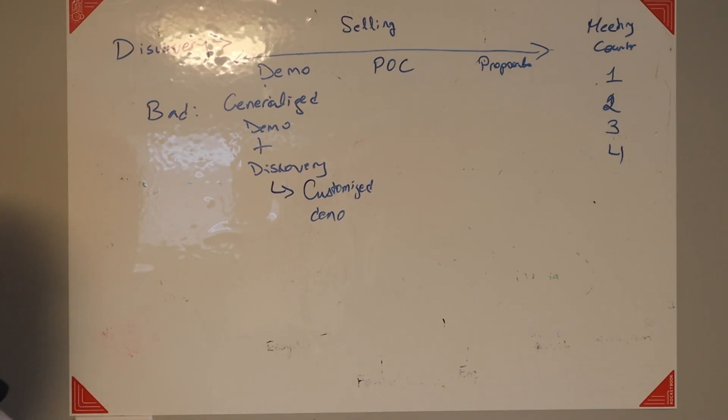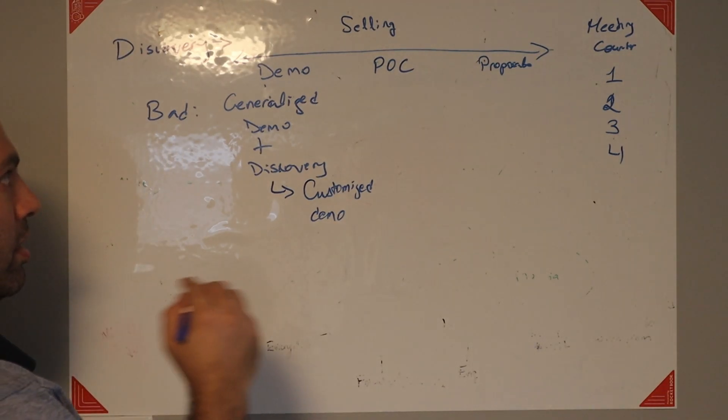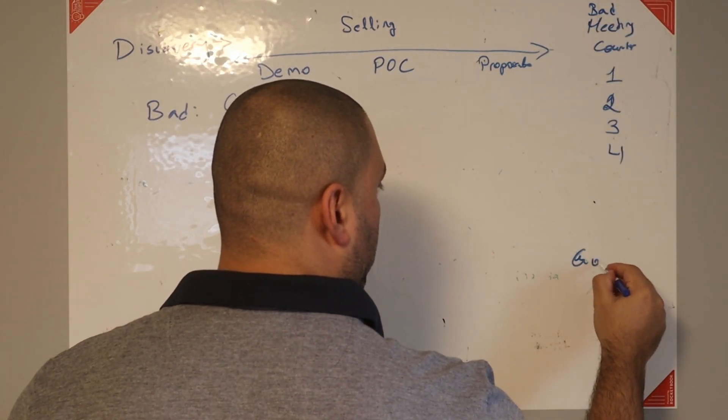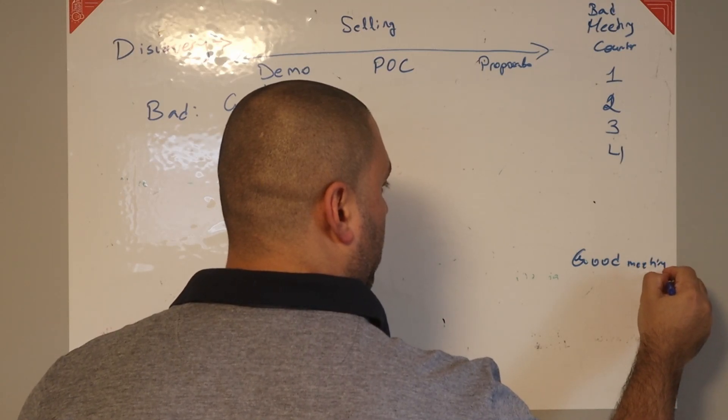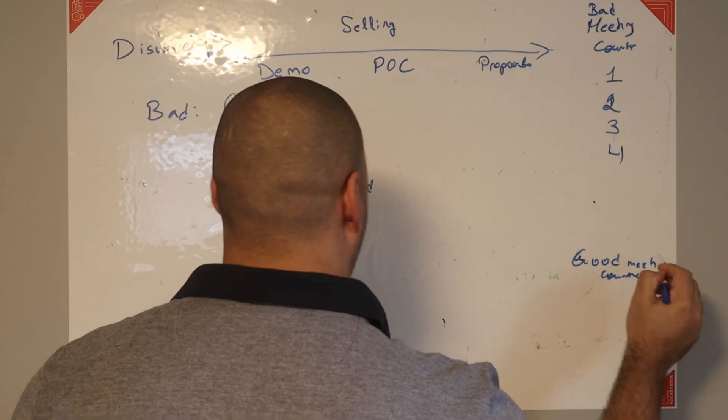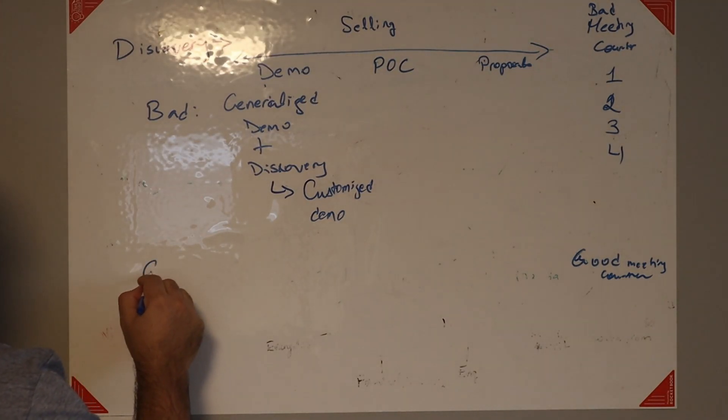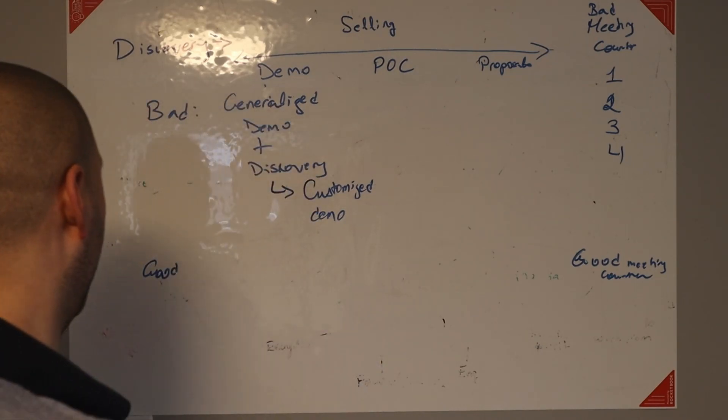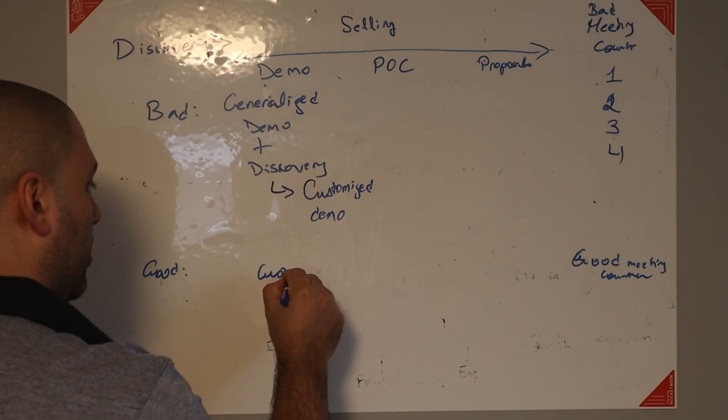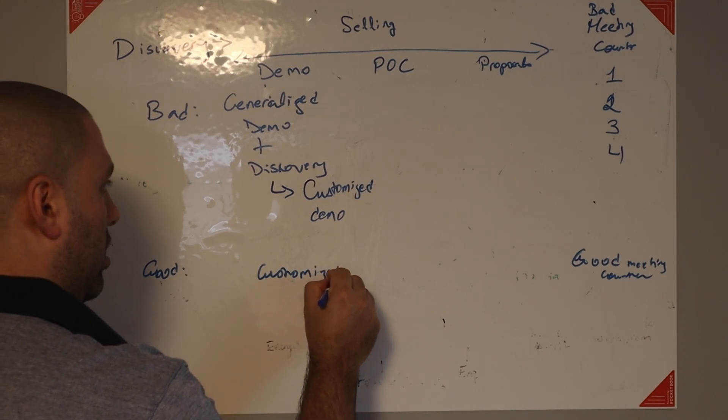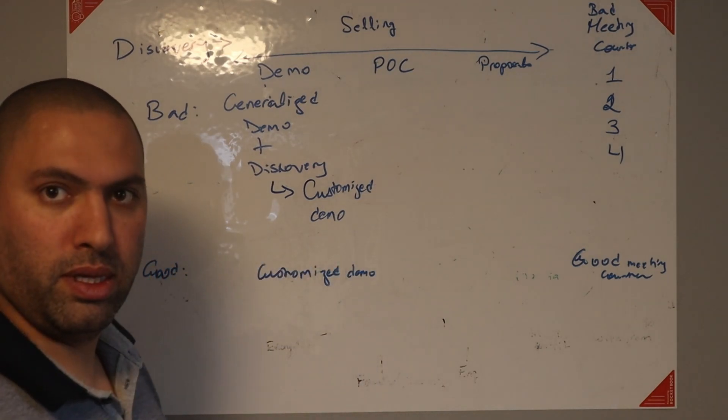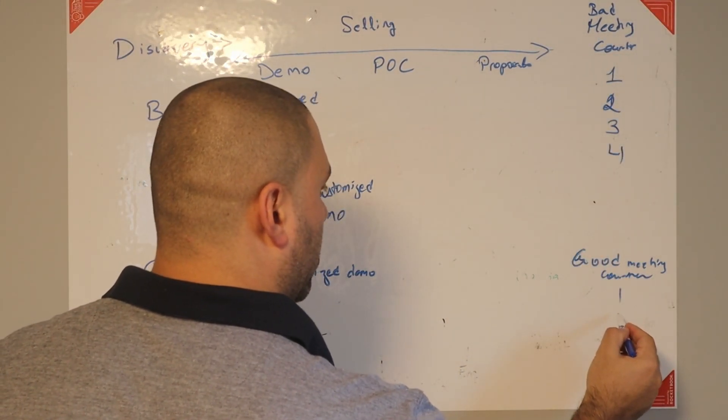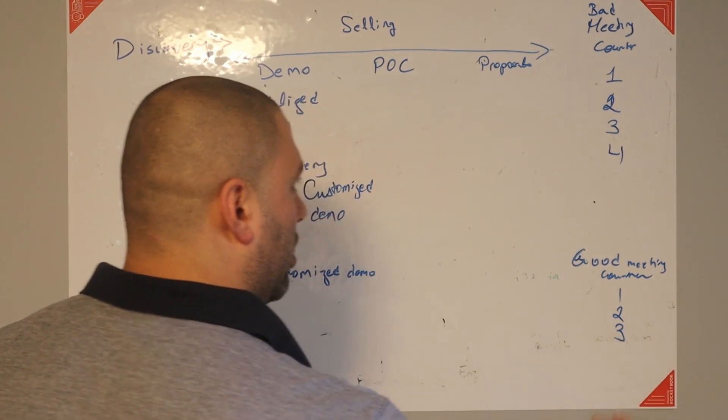Now, if you were to do a bad meeting counter versus a good meeting counter. If you're doing a good thing, and SEs were part of the discovery process, they understood exactly what the problem is, now we can show customized demo from the get-go. So, now you have the qualification call, discovery call, demo.